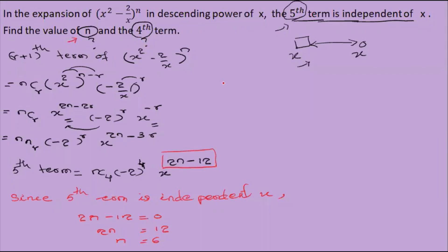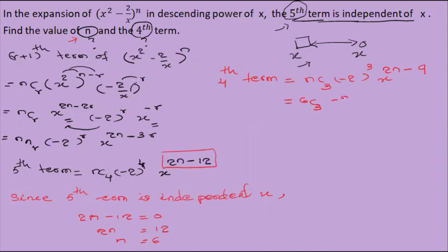With n equals 6, now find the 4th term. The 4th term uses r equals 3. So T4 equals 6C3 times (minus 2) to the power 3 times x to the power 2(6) minus 3(3), which is x to the power 12 minus 9 equals x cubed.